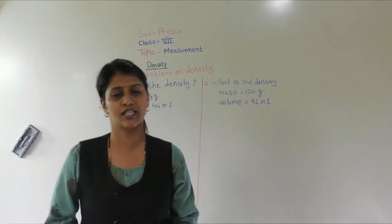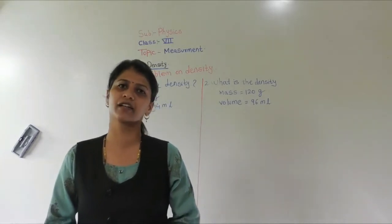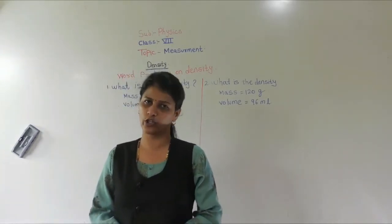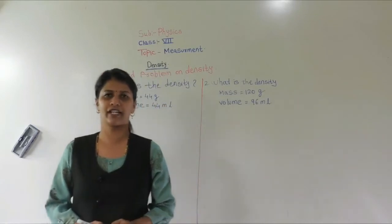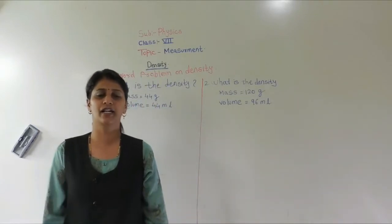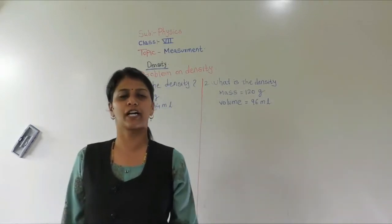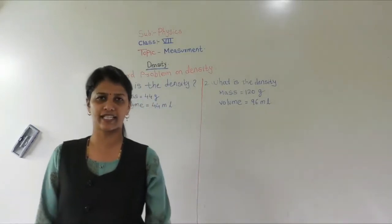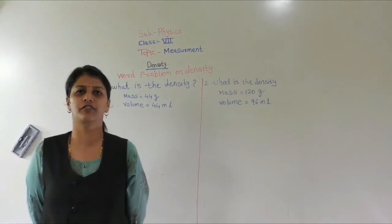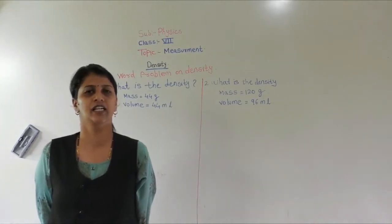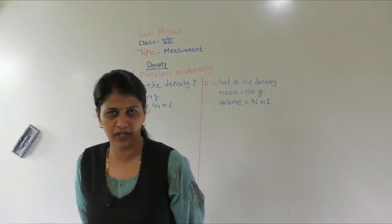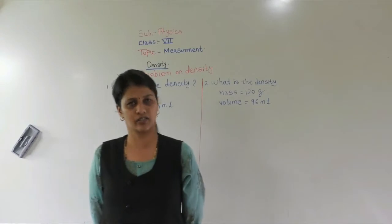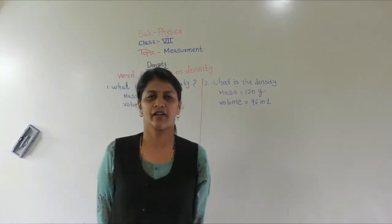So what is density? Density is nothing but mass upon volume — it is mass per unit volume. The SI unit of density is kg per meter cube, or gram per centimeter cube.